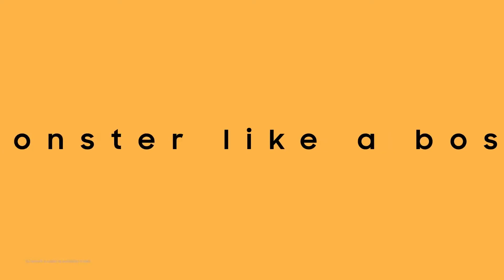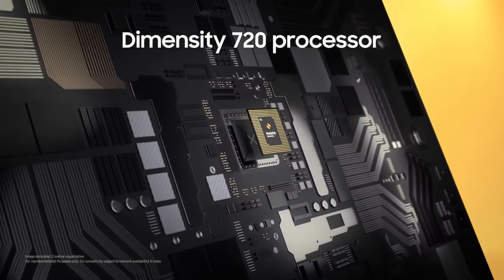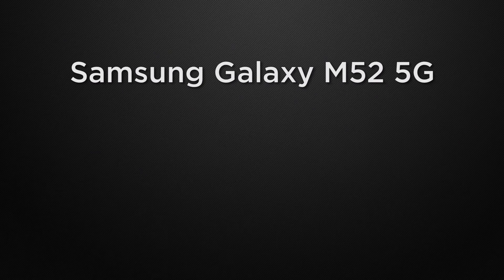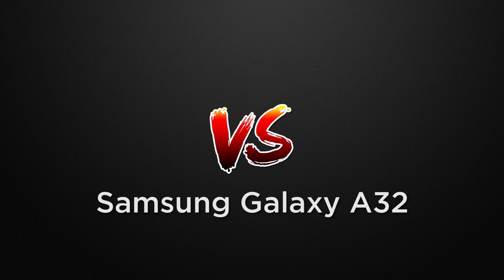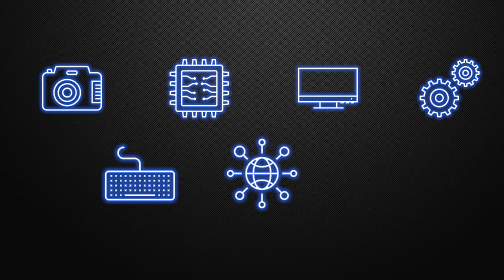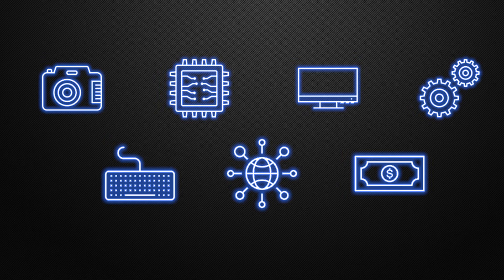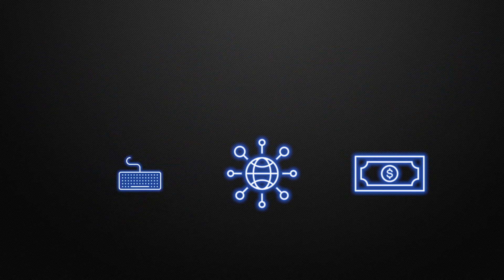Hey guys, this is Amit and you are watching Tech Dad. In this video we are going to compare the Samsung Galaxy M52 5G versus Samsung Galaxy A32. We will discuss which one is better in camera performance, display, audio, device features, communication chips, and prices. At the end of the video I will tell you which one is better according to me, so watch this video till the end.